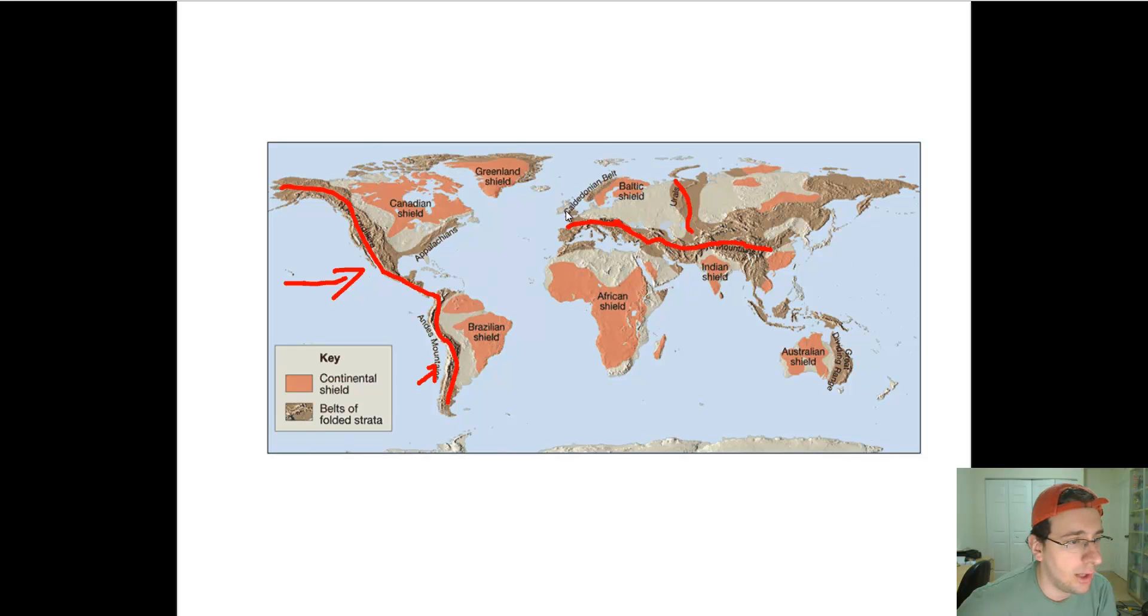And you also have the Caledonian Belts, which formed earlier during the formation of Pangaea. You have these islands here around the Pacific, which are forming because two plates are colliding in the Pacific. And you also have the Appalachian Mountains and North African Mountains, which formed when Pangaea collided. So mountain ranges are evidence of collisions between plates, which may have happened a long time ago or recently.